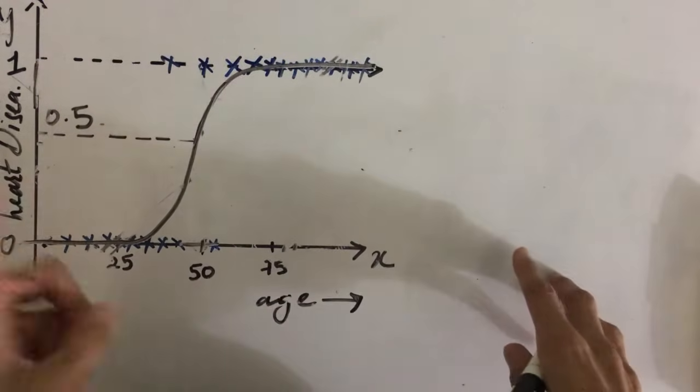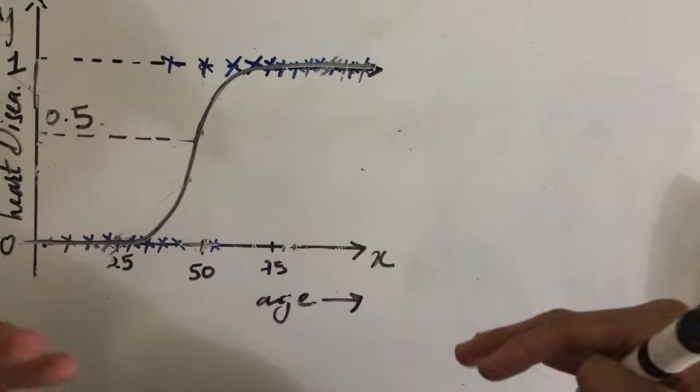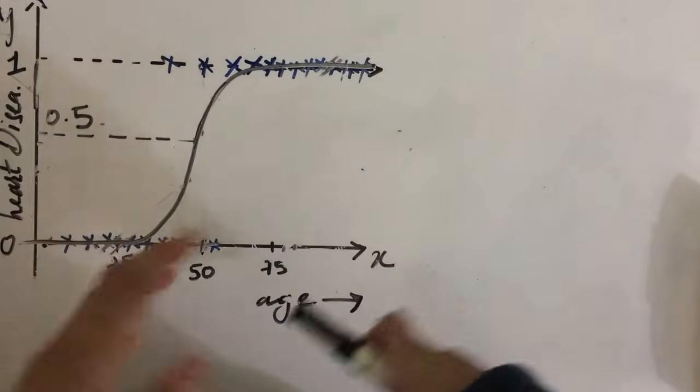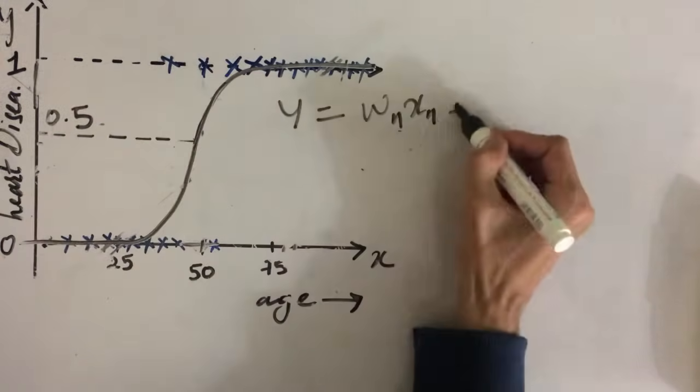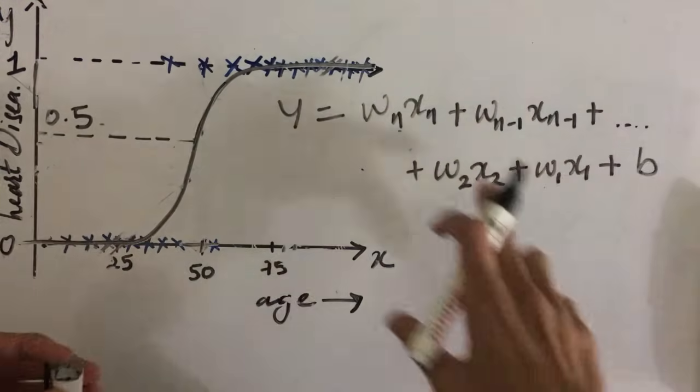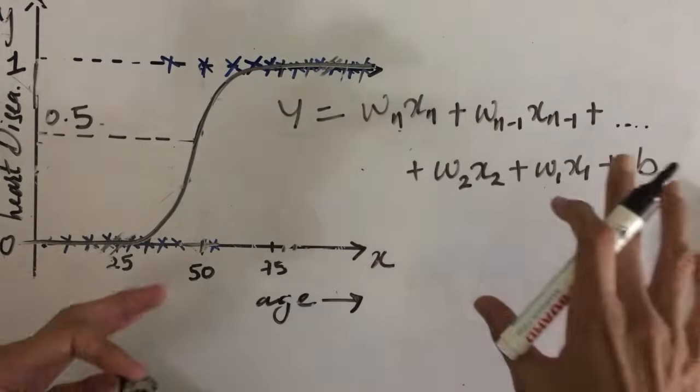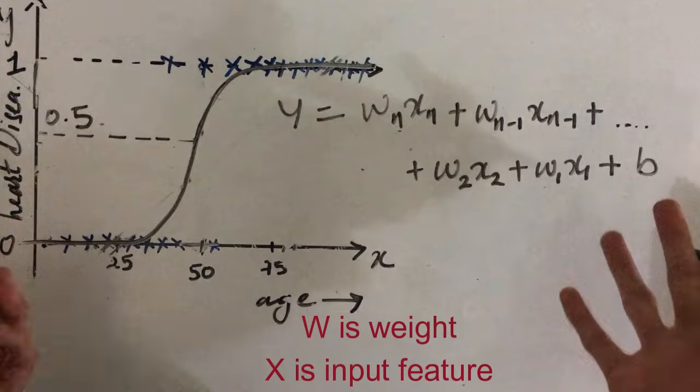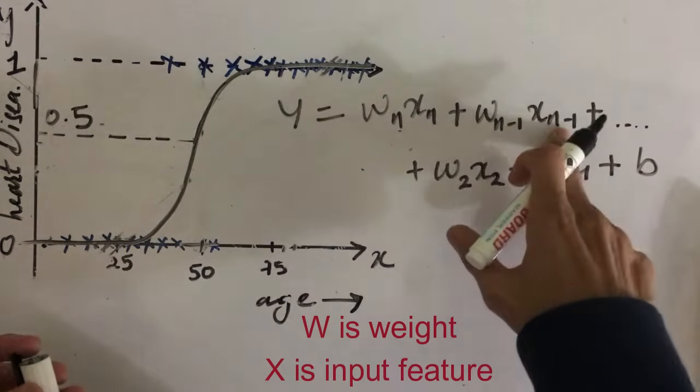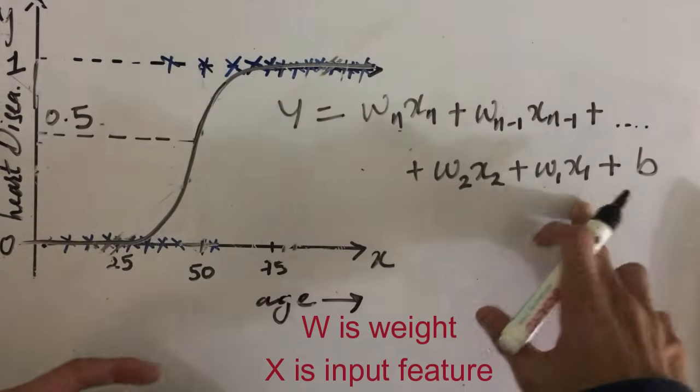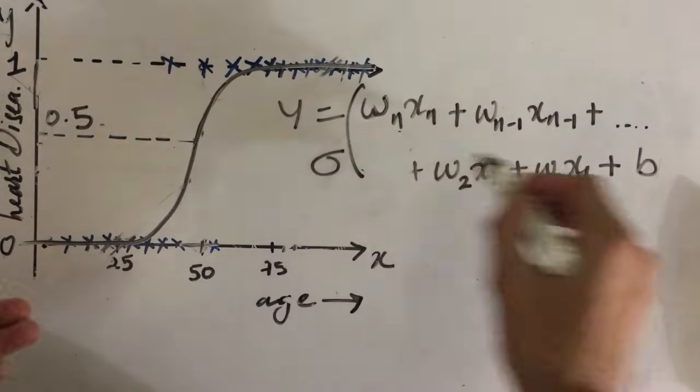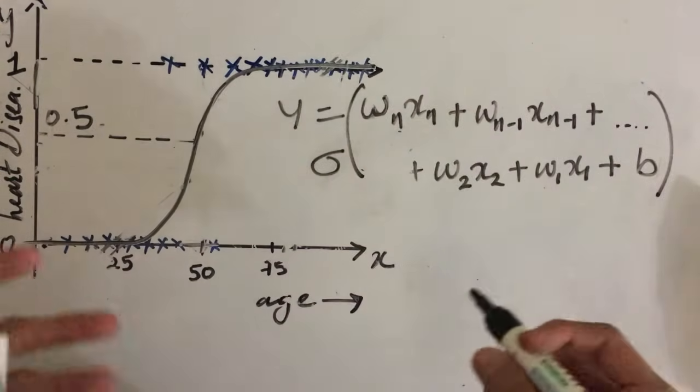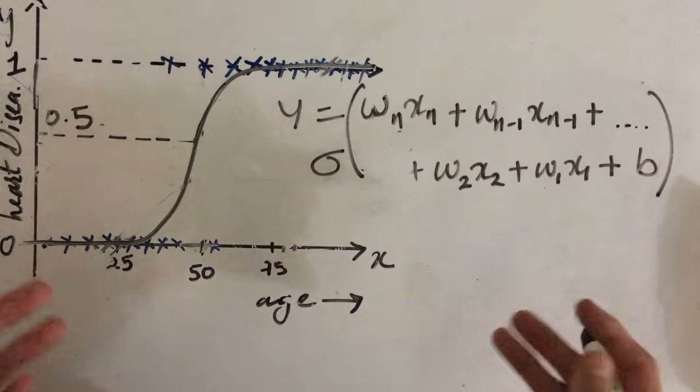Now this was only for one of the input feature. Let's say if our dataset has n number of features, then our equation of the straight line can be given by this. Now here w's are the parameters which can also be called as weights, and x are our features, our input features.